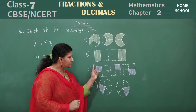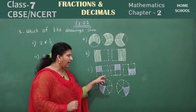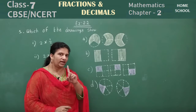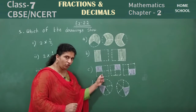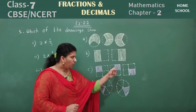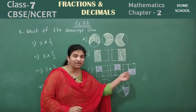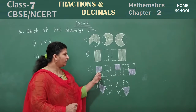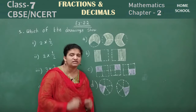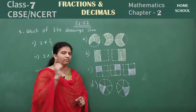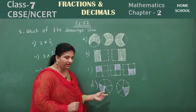Coming to the 3rd set: the whole has 4 parts. How many parts are shaded? Only 1. How can you write this fraction? 1 by 4. Observe — 1 by 4, 1 by 4, 1 by 4. There are 3 such figures, so your fraction is 3 into 1 by 4.